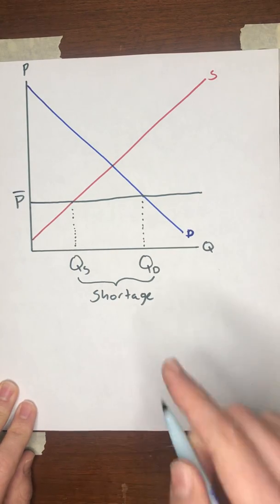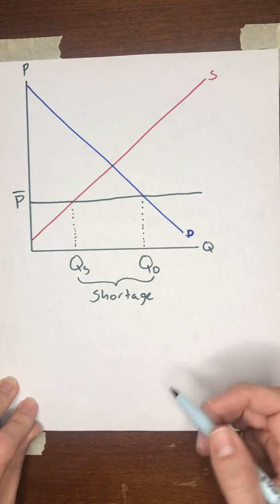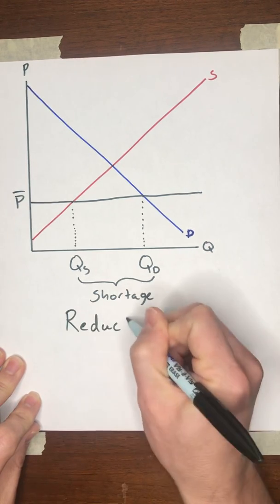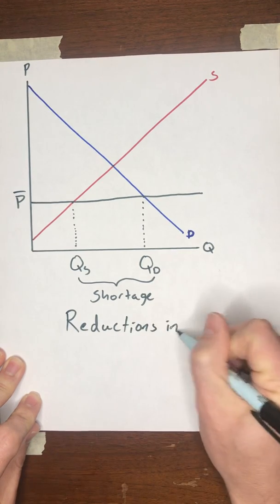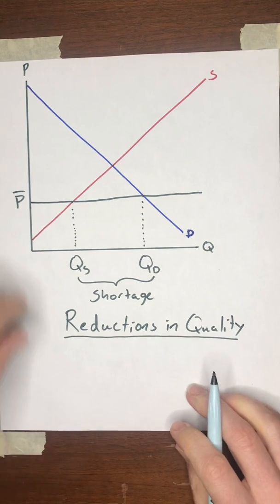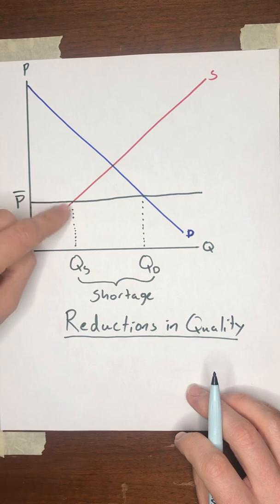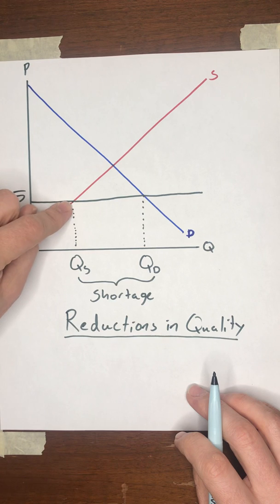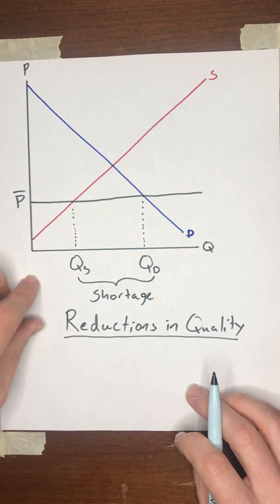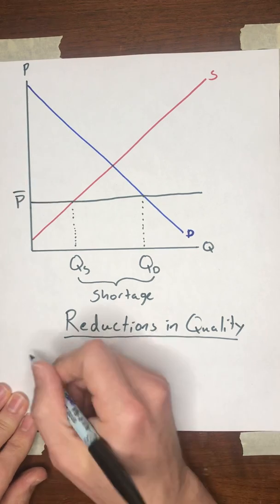The first of those I'm going to talk about in this video and then I'll finish this video and move on to the next one. The first effect of a shortage is going to be reductions in quality. Remember that the seller's goal is going to be maximizing their own profit. That's what they want to do. And they can't maximize their profit by raising prices. The law is restricting them from doing that. So what can you do instead? Well, if you can't raise price, something you might be able to do instead is cut your costs.